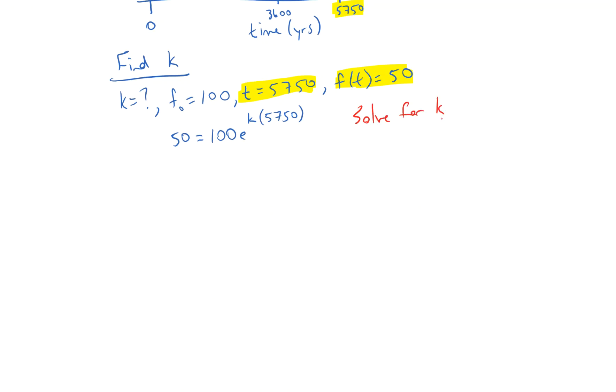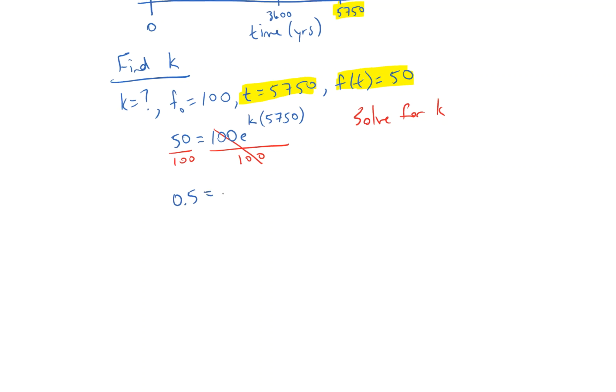We start by dividing both sides by 100. So 50 divided by 100 is exactly 0.5. So I'll write it like that. You could leave it as 50 over 100. You could write it as the fraction one-half. Just don't round it. It's not a good idea to round it. On the right side, we have e to the k times 5750, which is more commonly written as 5750 times k.